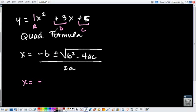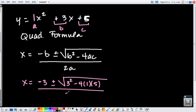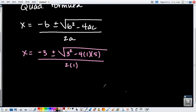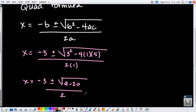So negative b, which is 3, plus or minus the square root of b squared, which is 3 again, minus 4, times 1, times 5, all of this divided by 2 times 1. So now we're going to go ahead and simplify. We end up with negative 3, plus or minus the square root of 9 minus 20, divided by 2.